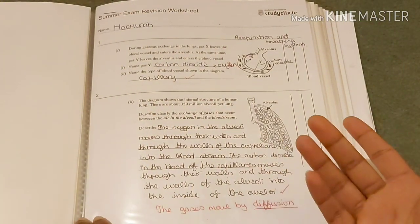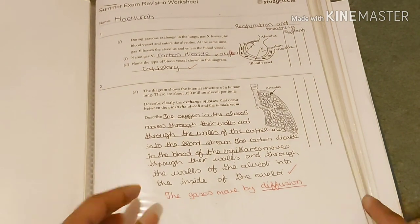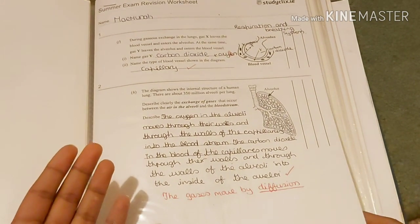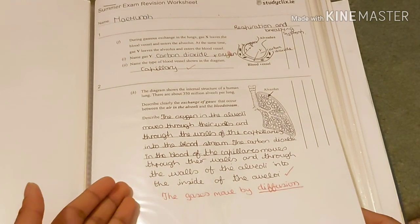That's the chemical world and summer exam revision worksheet I got from my science teacher. I got two questions wrong and the rest of them correct, so that means I did learn something.